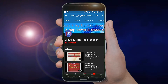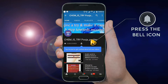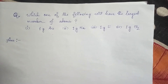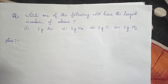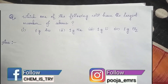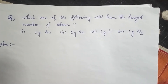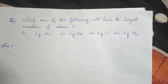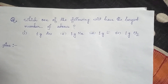Hello everyone, welcome to my study channel chemistry. Subscribe my channel by clicking on the subscribe button and press the bell icon so that you never miss any updates. Which one of the following will have the largest number of atoms? The first option is one gram gold, second is one gram sodium, third is one gram lithium, and fourth is one gram chlorine. Before finding the answer, we first have to calculate the number of atoms in each case.